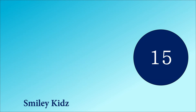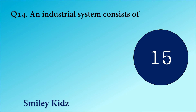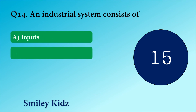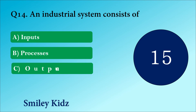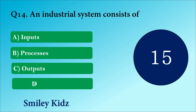Question number 14. An industrial system consists of? Your options are A. Inputs, B. Processes, C. Outputs or D. All of these.